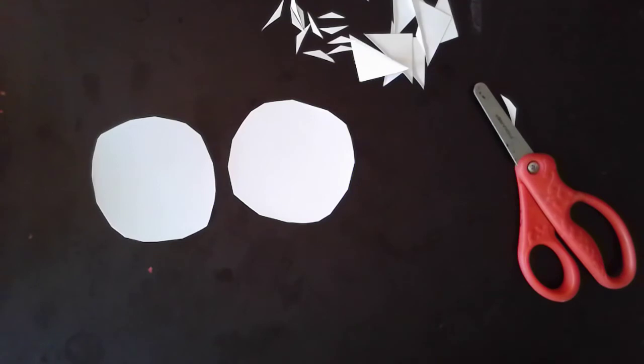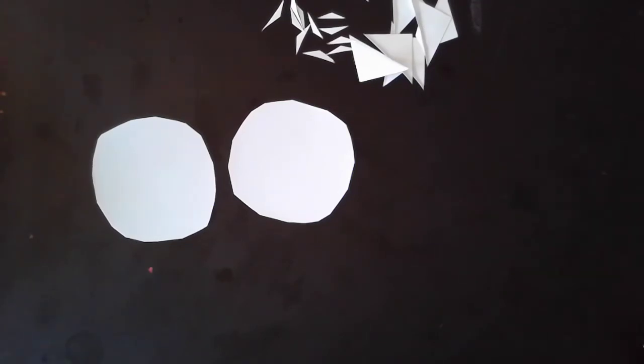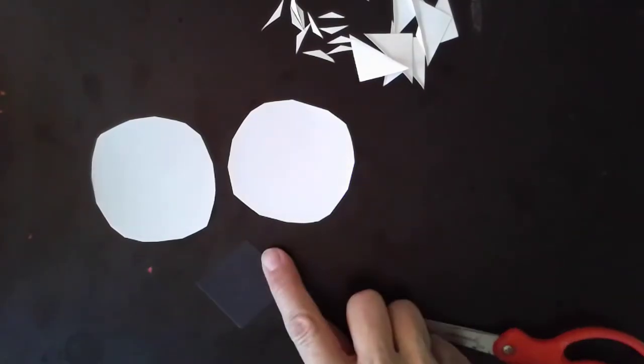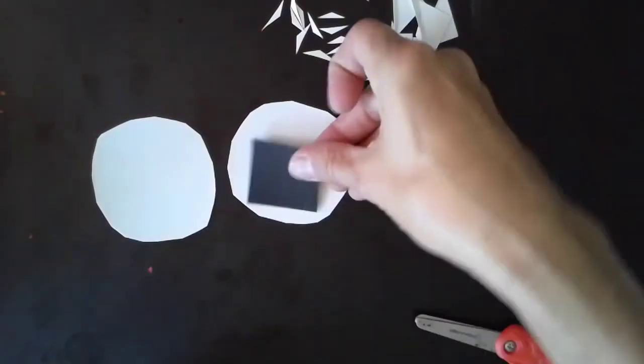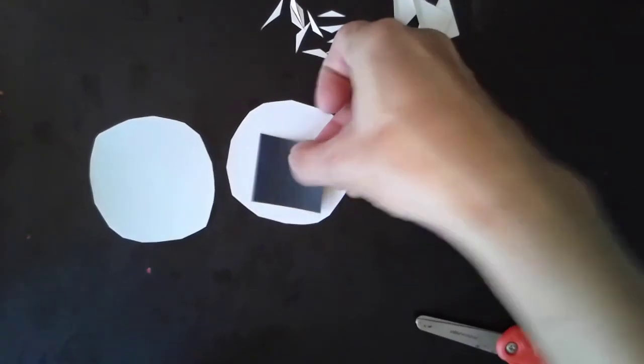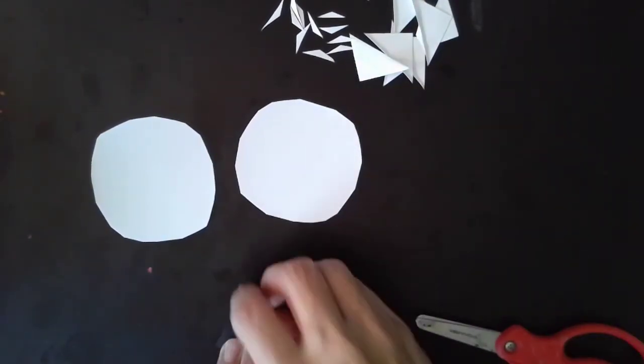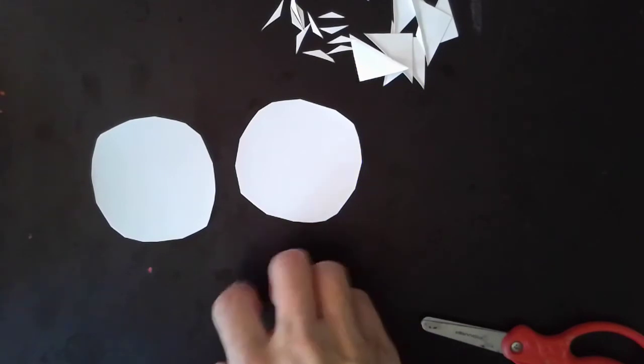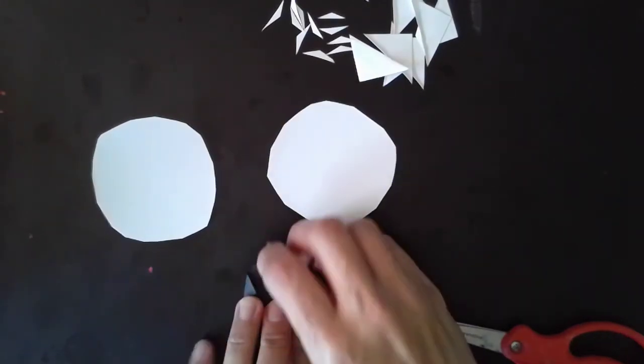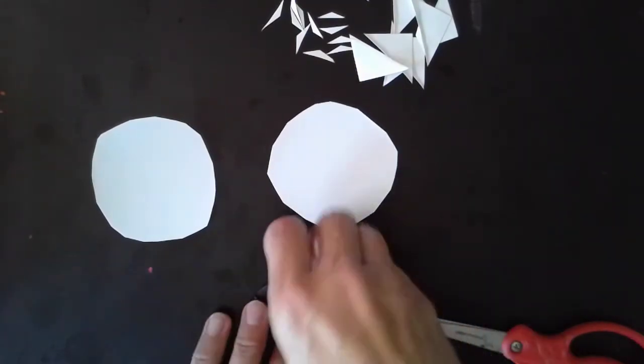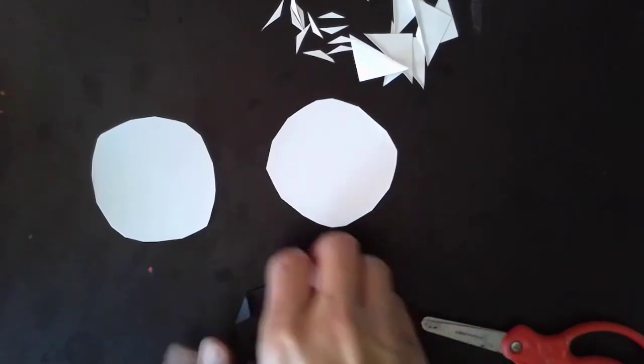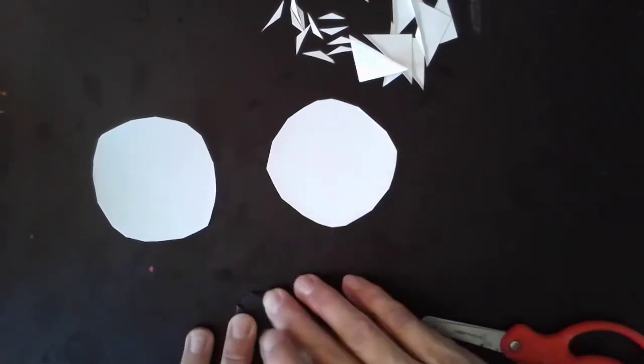But now there's one more thing that we have to do. We're going to do the same thing. We're going to cut ourself a circle, but this time out of black paper so we can make his pupil. Okay, so I'm going to fold these over, but this is going to be smaller. You know why? My square is smaller, which means my circle is going to be smaller. So everything I do is going to be a little bit smaller.